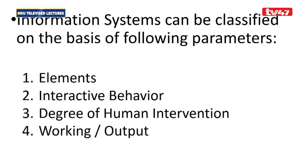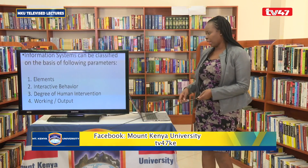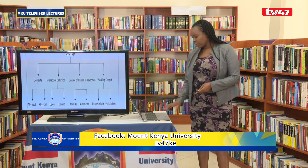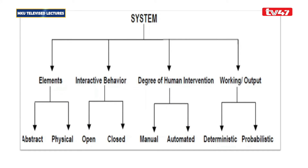Information systems can be classified on several bases. Based on elements, we have abstract or physical systems. Based on interactive behavior, we have open systems — which accept input from the environment — and closed systems, which do not. Based on degree of human intervention, we have manual or automated systems. Based on working output, we have deterministic systems, where you can determine the outcome, and probabilistic systems, where the outcome is based on probability.